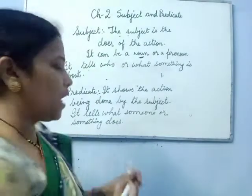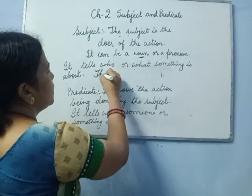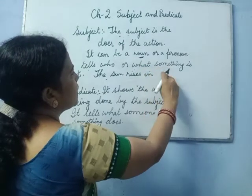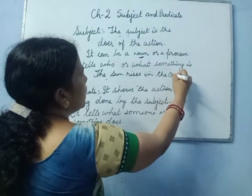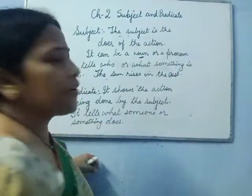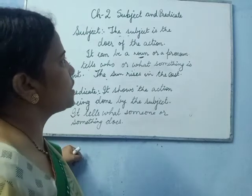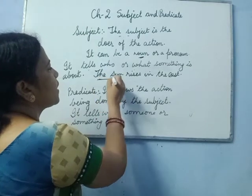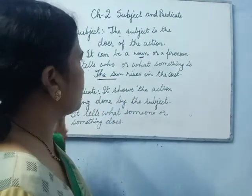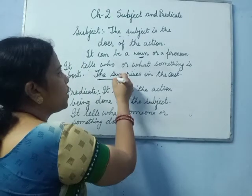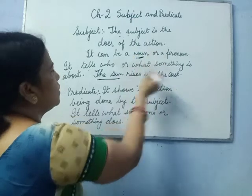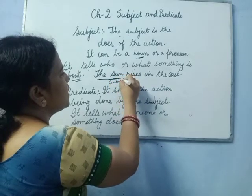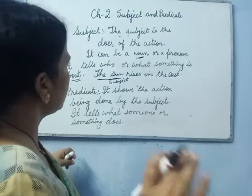The next sentence: 'The sun rises in the east.' In this sentence, who is the doer? About what are we talking? We are talking about the sun. It is also a noun. The sun is the subject.